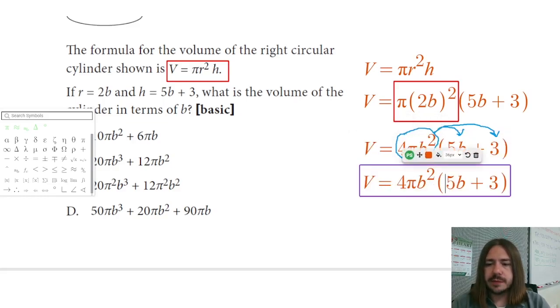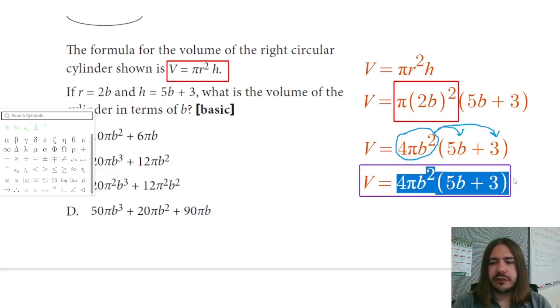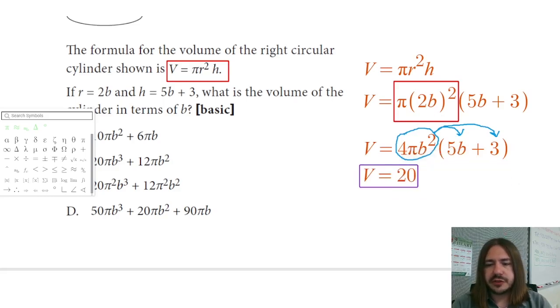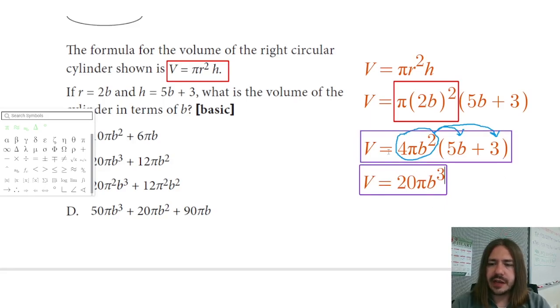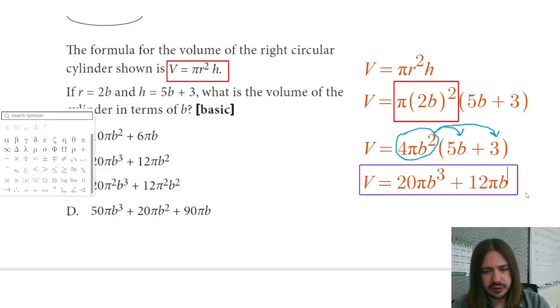So 4 times 5 is 20. There's nothing to multiply the pi by, so it just remains pi. And b squared times b is b cubed. That's the first term. The second term is what I get when I multiply 4 pi b squared by 3. 4 times 3 is 12, so I get plus 12 pi b squared.